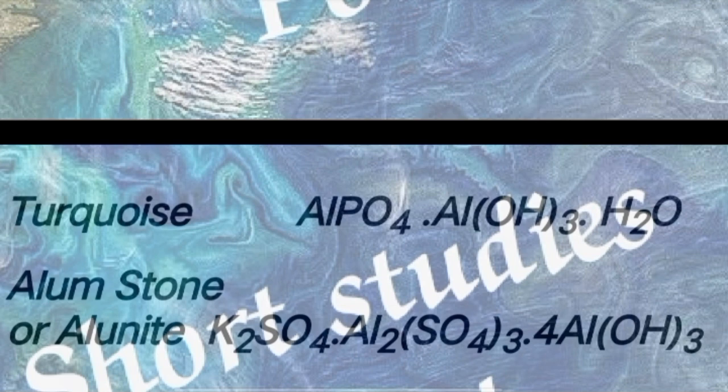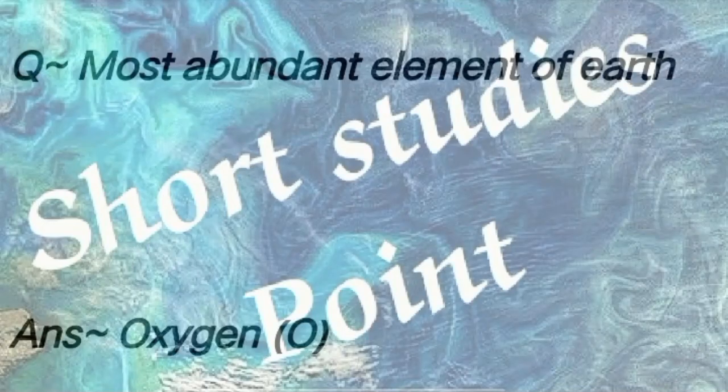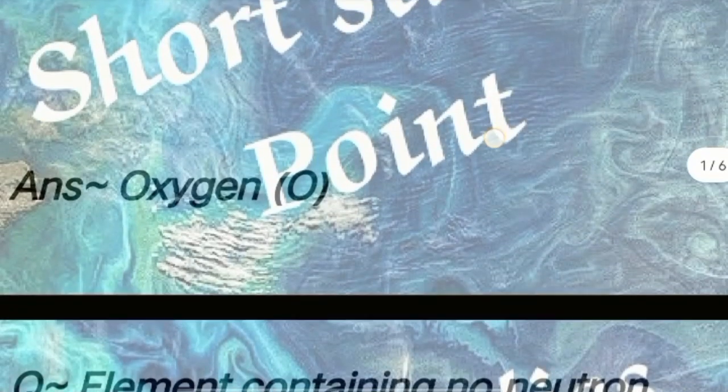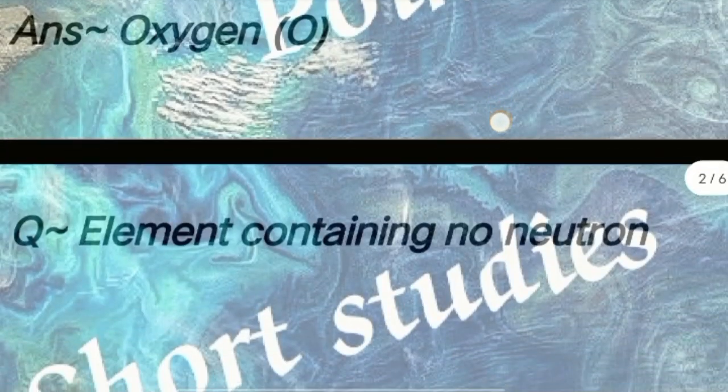Continued ores: Toroisite (AlPO4·Al(OH)3·H2O), Alum Stone (K2SO4·Al2(SO4)3·4Al(OH)3). Next question: Most abundant element of Earth. Answer: Oxygen.